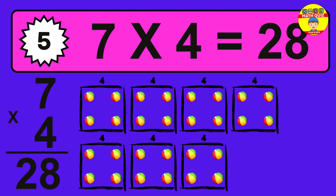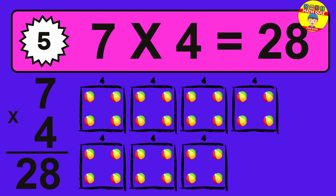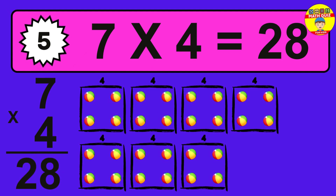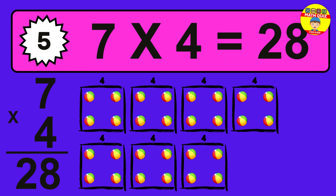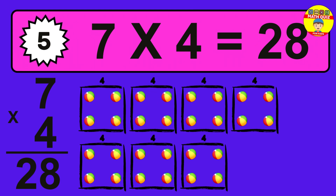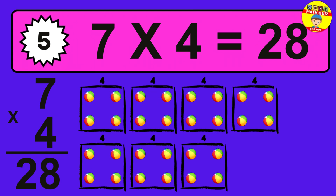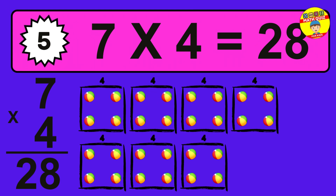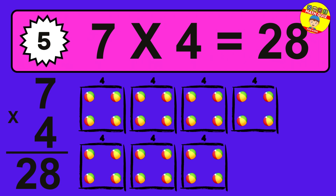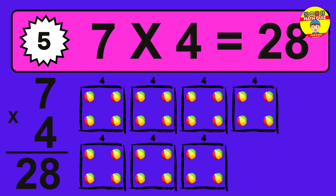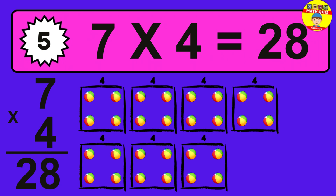Question 5. 7 times 4 equals what? The answer is 7 times 4 is 28. To calculate, we have 7 groups with 4 balls each one. So how many balls do we have? 28 balls.